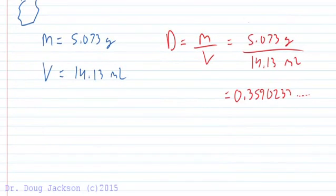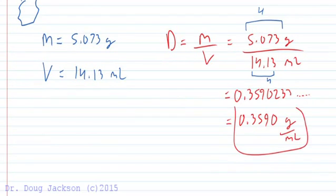So what do we do? We look and count the number of significant figures. The top, the numerator has 4: 1, 2, 3, 4. In between zeros are significant. The bottom has 4. And in multiplication and division, you keep the minimum number of sig figs in either the numerator, denominator, or factor. So 4 is what we're allowed in this problem. We round off to 0.3590 grams per milliliter.